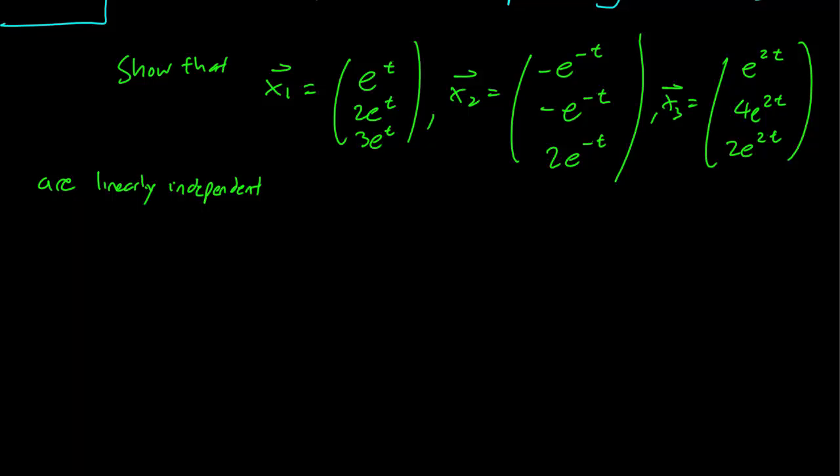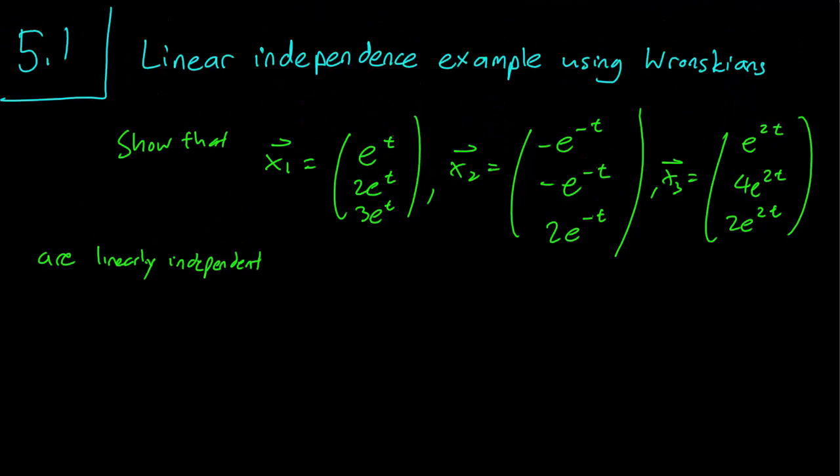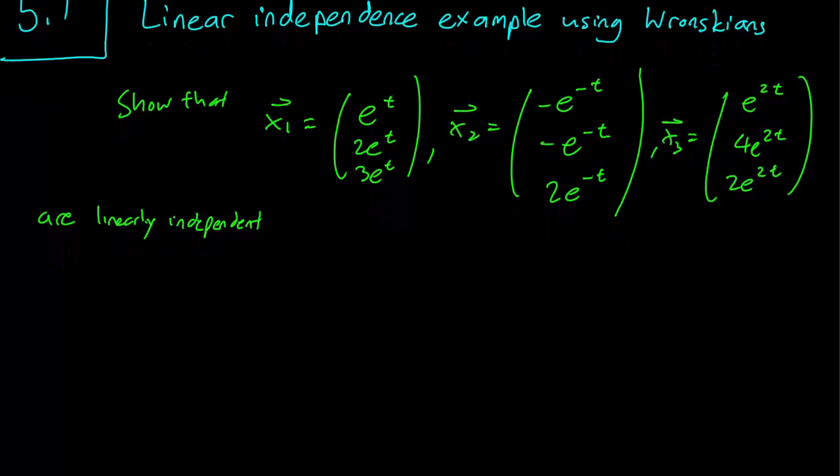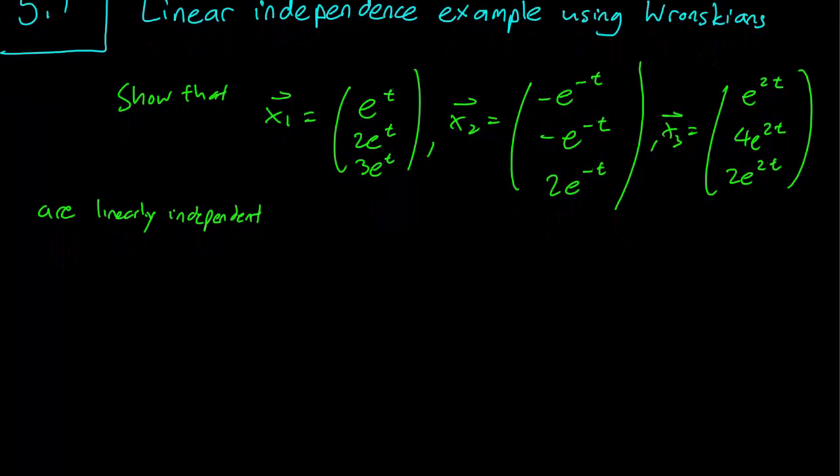Hello class, this is section 5.1 and for this video we are going to work through a linear independence proof using Wronskians for matrix equations. We have three vectors here and we want to show that they are linearly independent.